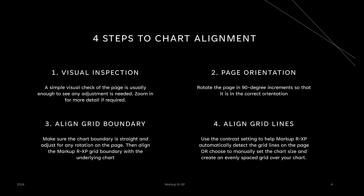The final step, once you've got the boundary defined, is to set the grid lines. We have two options: we can use the pattern matching built into Markup RXP to automatically set up those grid lines using the contrast feature, or you can override this and manually set the grid lines. This will look at the current grid boundary and evenly space the rows and columns you define between those boundaries. That's the four-step process for aligning grids in single page mode.